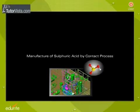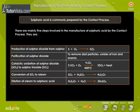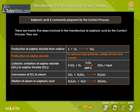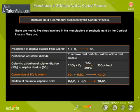Sulfuric acid is commonly prepared by the contact process. There are mainly five steps involved: production of sulfur dioxide from sulfur, purification of sulfur dioxide, catalytic oxidation of sulfur dioxide to sulfur trioxide, conversion of sulfur trioxide to oleum, and dilution of oleum to sulfuric acid.